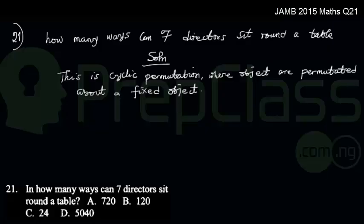Question number 21 says: In how many ways can 7 directors sit round a table? This is a case of cyclic permutation, where objects are permutated around a fixed object.